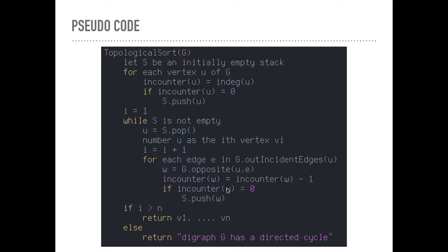So inCounter(w) is going to be inCounter(w) minus 1. And if it's 0, we'll push that to the stack. We'll keep this while loop going.